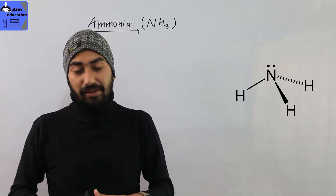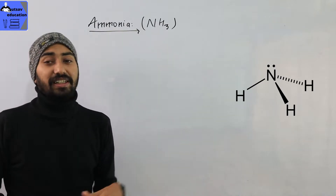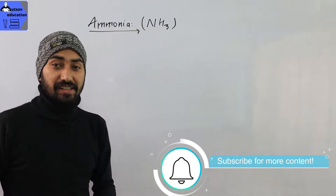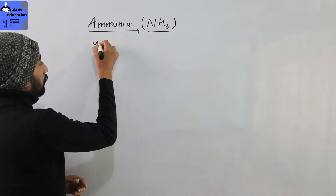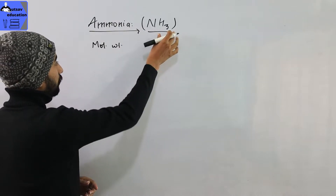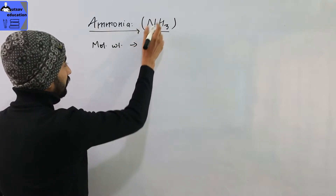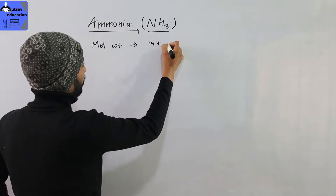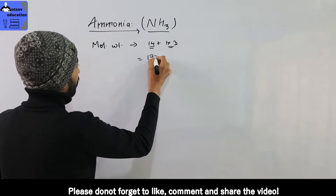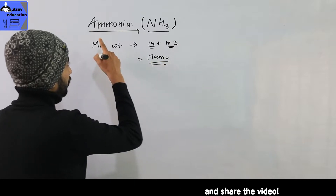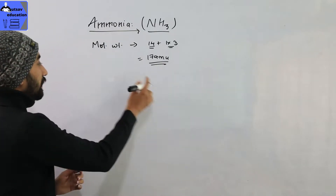Ammonia is a compound gas. Its molecular formula is NH3. Now, the molecular weight of ammonia: nitrogen atomic mass plus hydrogen one into three — nitrogen is 14 plus 3 equals 17 atomic mass units. So ammonia's molecular weight is 17 atomic mass units.